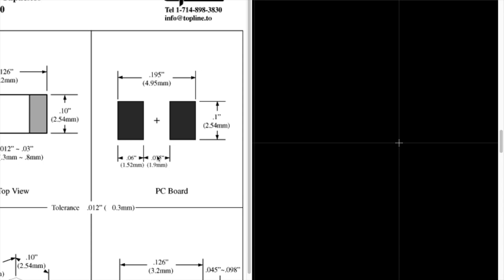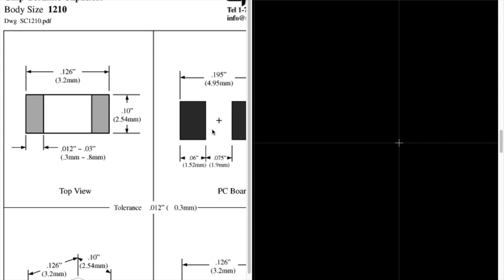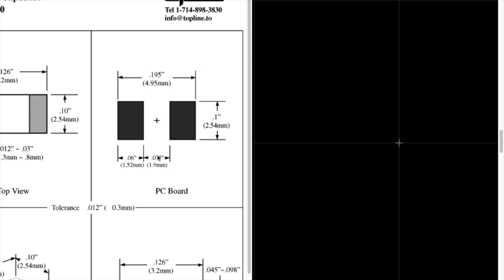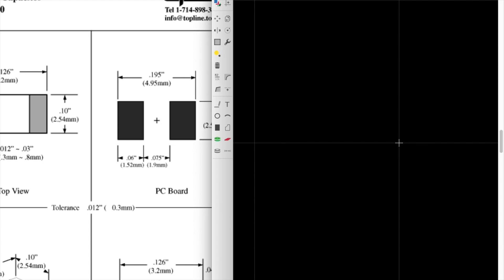We see that the spacing between the two pads is 1.9 millimeters, the width of a pad is 1.52 millimeters, and the height of a pad is 2.54 millimeters. There's some flexibility here because this is the minimum dimension — we could make the pad slightly bigger. All this would do is leave some exposed pad on either side of the part after you place it. While this isn't necessarily a bad thing, we don't want to make it too much bigger.